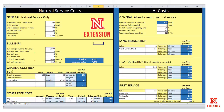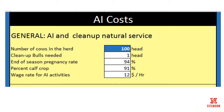Now let's look at AI cost. This is the spreadsheet as a whole, but we're going to focus on the right-hand side on AI costs. The first area of data entry is the number of cows in the herd and the number of cleanup bulls we're going to need. In most cases if we AI, we'll turn a bull out with those cows to get any cows bred that we missed through AI. This wage rate for AI activities gives us the opportunity to put in the number of hours invested from a labor standpoint and an hourly wage we would want to pay ourselves or expect to pay someone else.